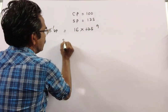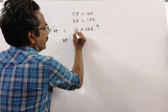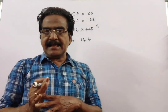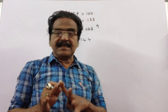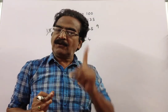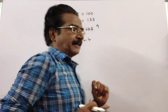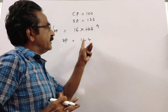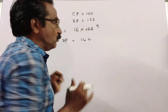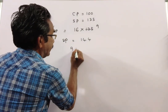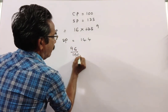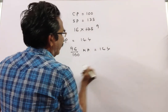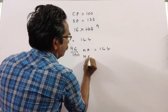So the selling price of each article is 144 rupees. Friends, he has to sell each article for 144 rupees after a discount of 4 percent. A 4 percent discount means this selling price of 144 equals 96 percent of the market price. So 96 percent of the market price is 144.